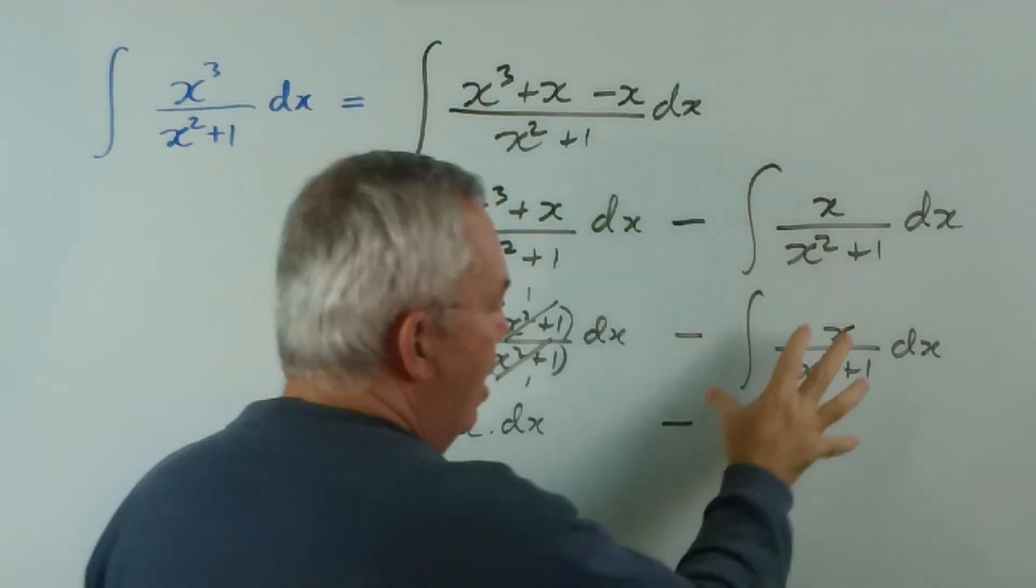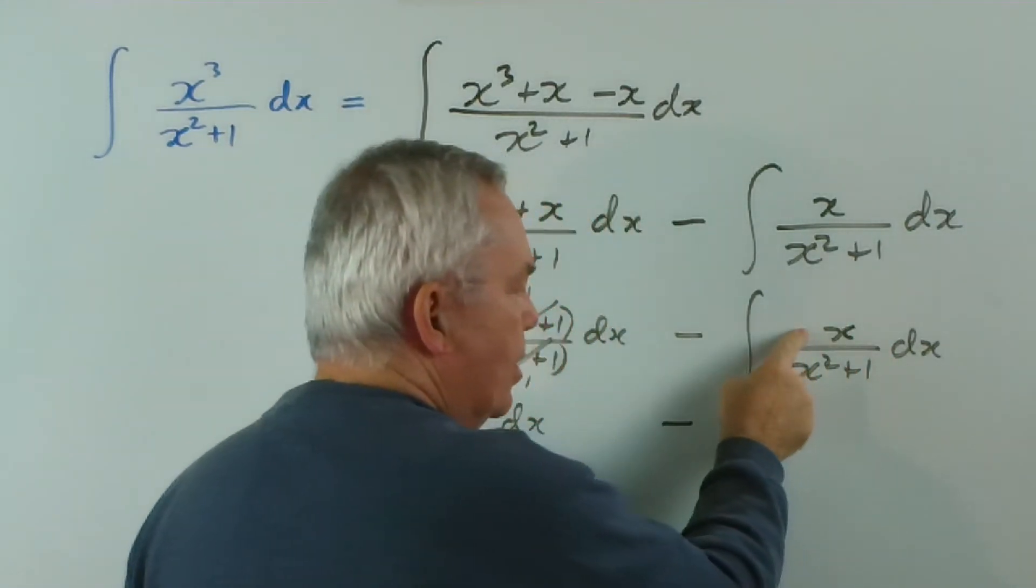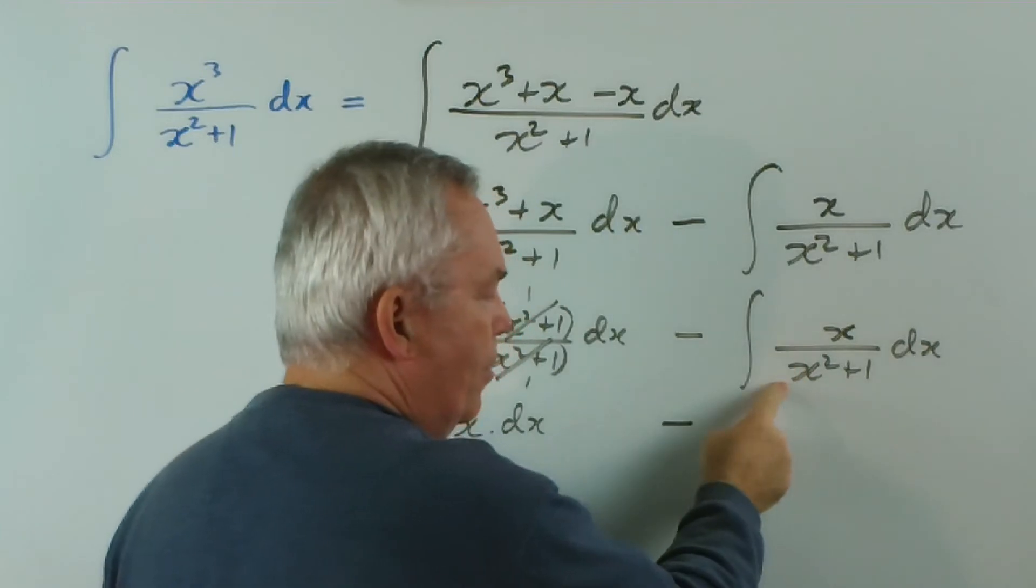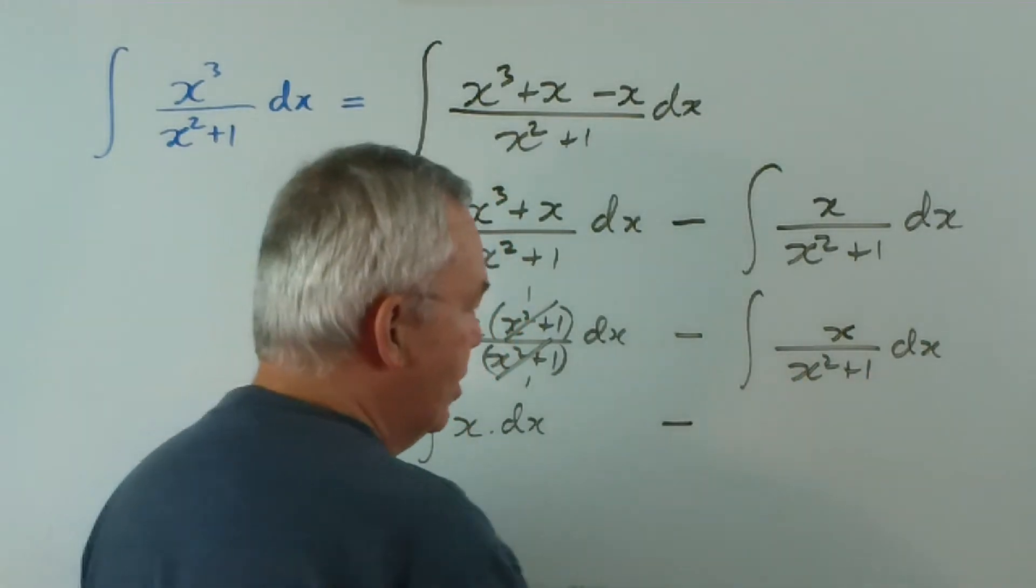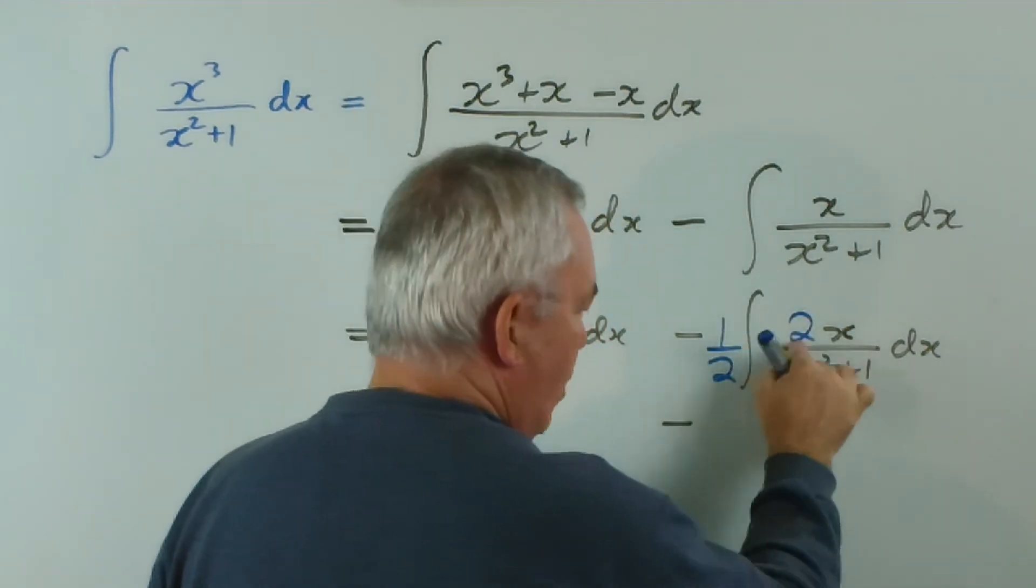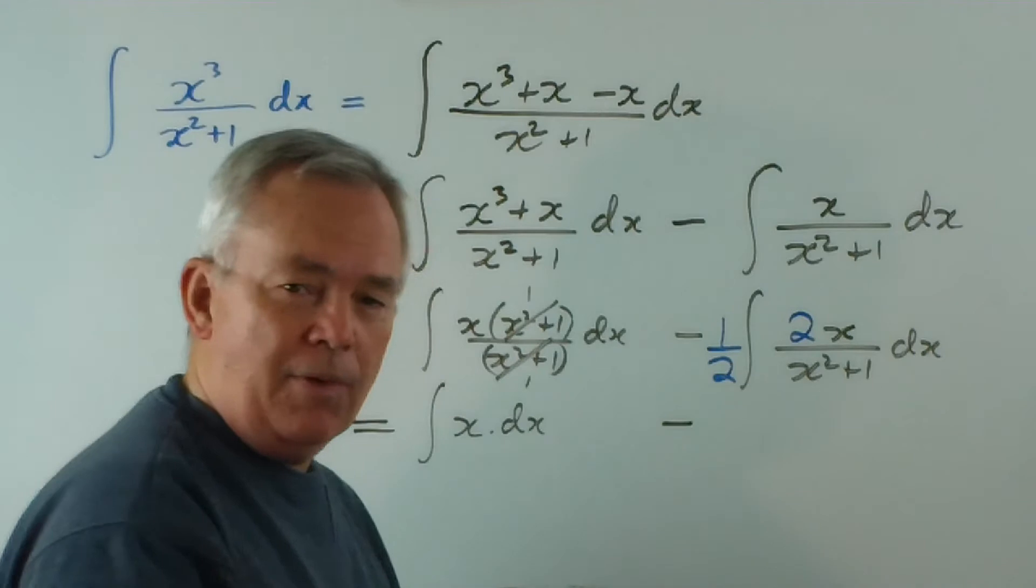And what's going to happen here is that now this is the derivative or almost the derivative of this one. The derivative of x squared plus 1 is 2x. So we will write the two in there and compensate with the half out the front.